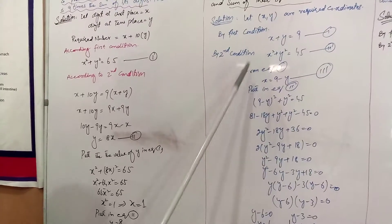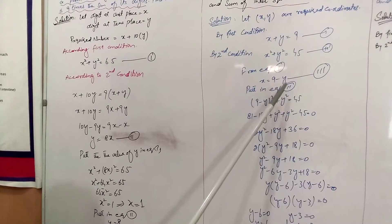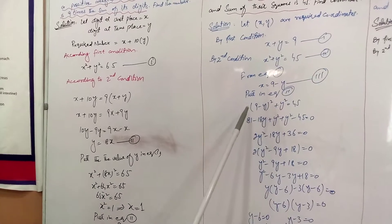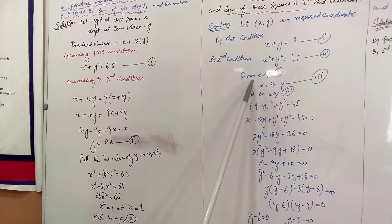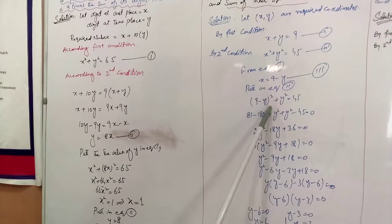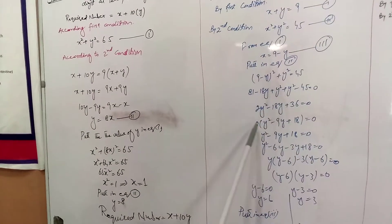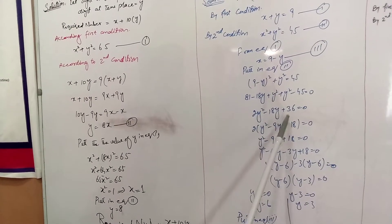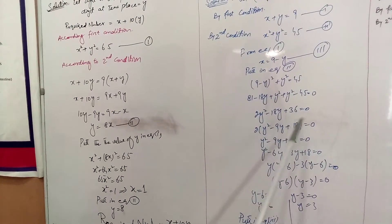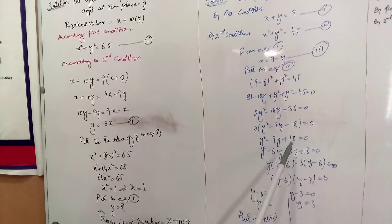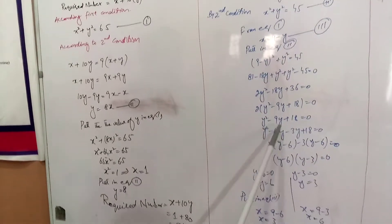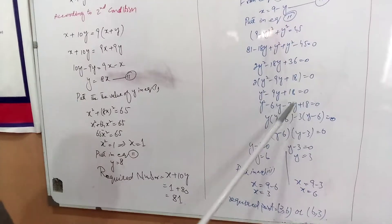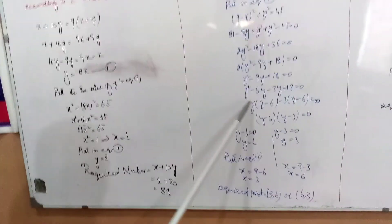From equation 1, x is equal to 9 minus y. We substitute this into the second condition and simplify, giving 2y squared minus 18y plus 36 is equal to 0, then y squared minus 9y plus 18 is equal to 0.